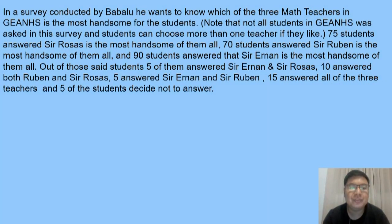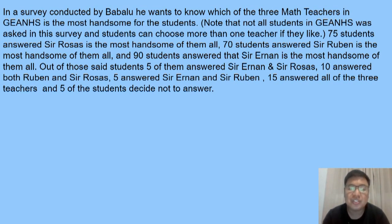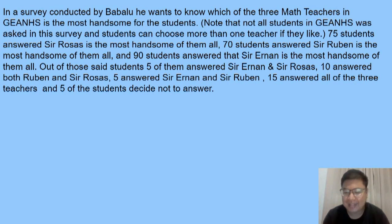Out of those students, five of them answered Sir Ernan and Sir Rosas. Ten answered both Sir Ruben and Sir Rosas. Five answered Sir Ernan and Sir Ruben. While fifteen answered all of the three teachers. And five of the students decided not to answer.